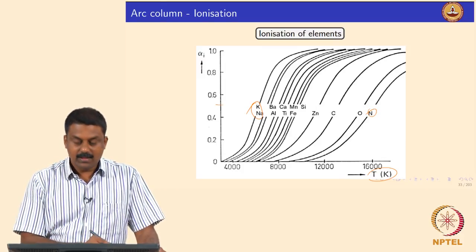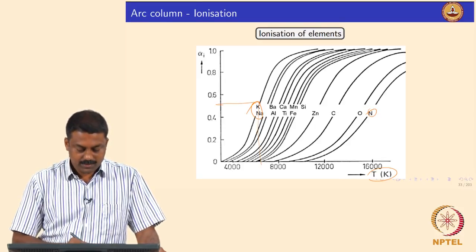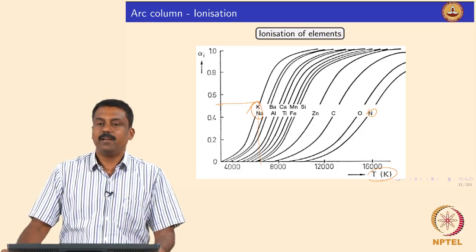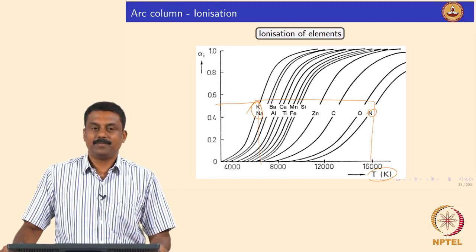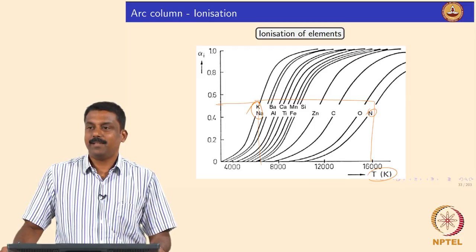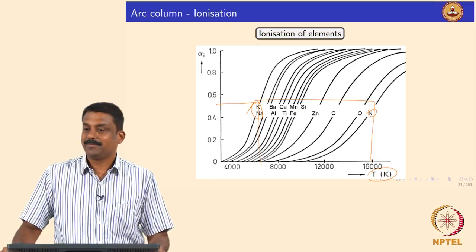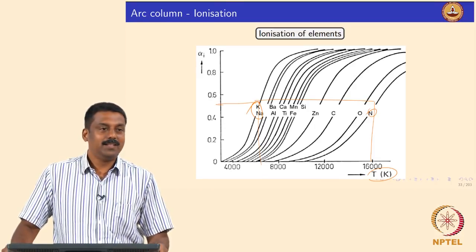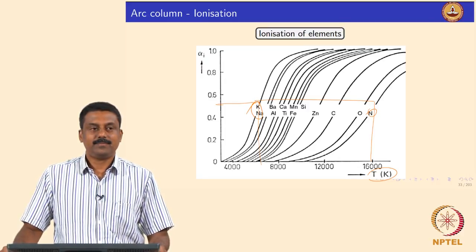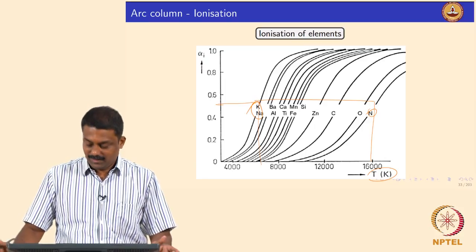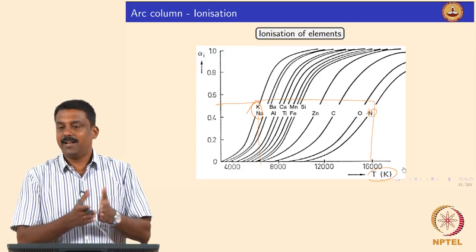Similarly, for 50 percent ionization, it can never happen for nitrogen at temperatures of about 7000 Kelvin. The system temperature should be increased close to 60,000 Kelvin — then only can you ionize and have sustained discharge. That is why we need to heat it up to such temperatures in an arc; otherwise you will never have sustained discharge.